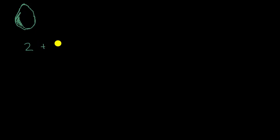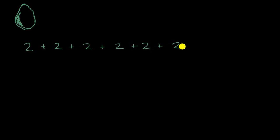Now, there are a couple of ways I could think about how many avocados I ate. I could say: I eat two a day, and I'm going to do that for six days, so I'm going to add six twos together. So it'll be two plus two plus two plus two plus two plus two. I have six twos right over there, and then I can add them together.